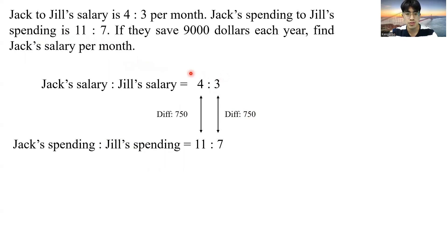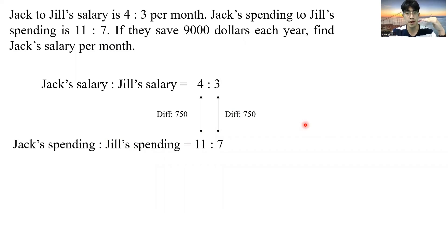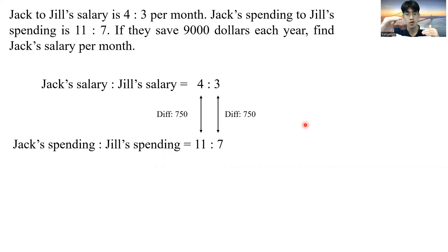In order to solve this kind of ratio problems, we first need to find common ground. For example, if I have a certain amount of money and Teacher Jonah has $100 more than me, if we both spend $200, Teacher Jonah will still have $100 more than me. The same applies here.